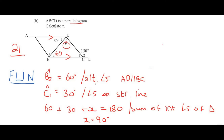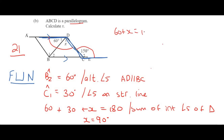If you solved this question a different way, that is perfectly fine — there are multiple approaches. A faster method would be to notice that the two sides are parallel and draw a Z spanning the full angle. That Z shows that the entire angle 60 plus X must equal 150 because of alternating angles, with AD parallel to BC. Solving this also gives X equals 90 degrees.